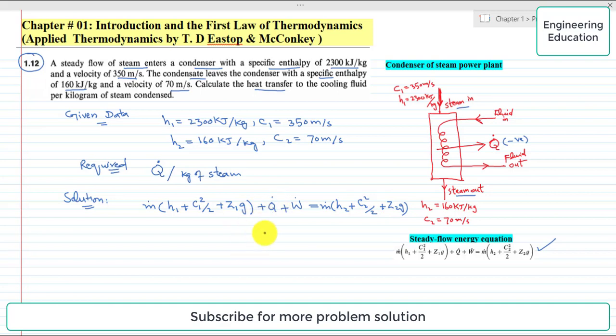Here Ẇ is the power output. For the condenser there is no power output, so the value of this is zero. Also there is no information regarding the elevation of the condenser, so we will assume that z₁ is equal to z₂.